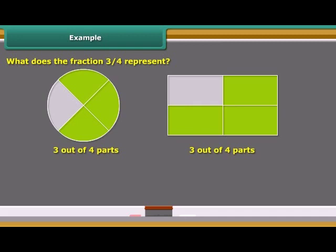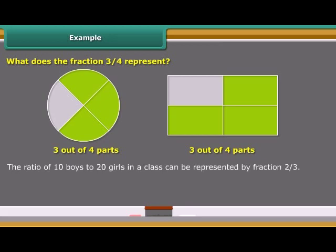The ratio of 10 boys to 20 girls in a class can be represented by fraction 2 upon 3. In the fraction 2 upon 3, number 2 is called the numerator of the fraction, and number 3 is called the denominator of the fraction.